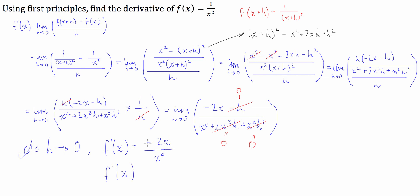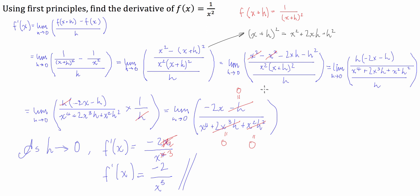If you simplify negative 2x over x to the 4, the x on top cancels with x to the 4 on the bottom by simple index laws, leaving x to the 3. So f prime of x equals negative 2 divided by x cubed. That's how you use first principles to find the derivative of f of x equals one over x squared. It tests more your knowledge of algebra rather than the first principles concept itself, but there you go.